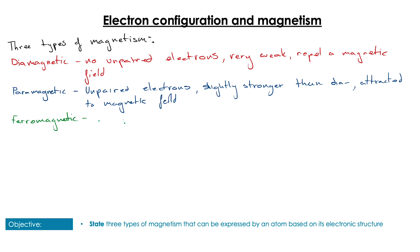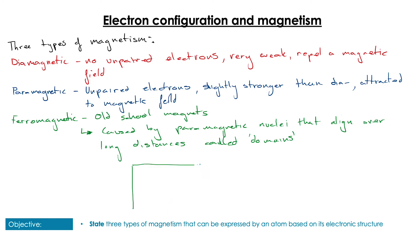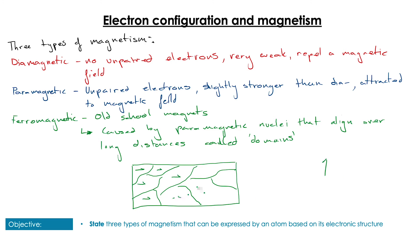The types of magnets you may know about or see in daily life are what we call ferromagnets — your old-school magnets. This is caused by paramagnetic nuclei that align and organize themselves over long-range distances, so the individual tiny attraction effects of the paramagnet are amplified. These aligned regions are called domains. In a bar magnet, each domain has all of its unpaired electrons lined up in the same direction, giving the long-range magnetism we're used to. However, only nickel, cobalt, and iron actually exhibit this type of magnetism.